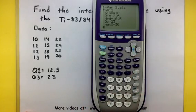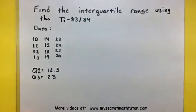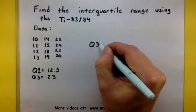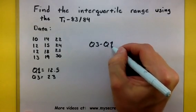Well now that the calculator has done its job, let's do ours and subtract the two in order to find this interquartile range. So we want to take this Q3 and subtract Q1.